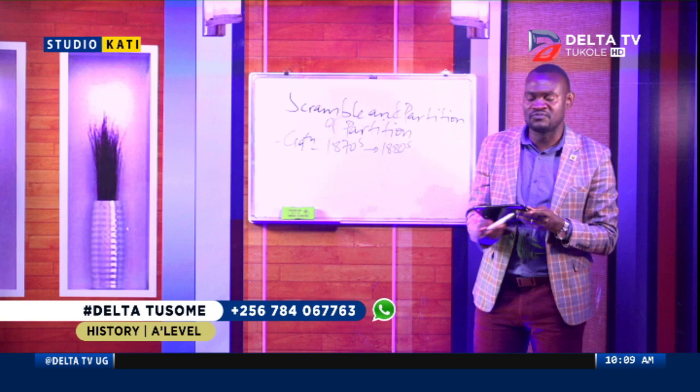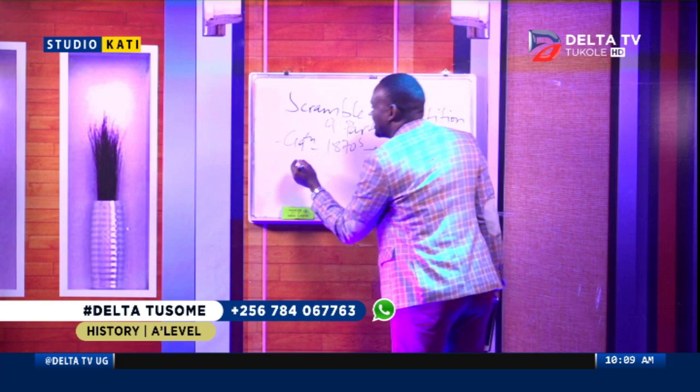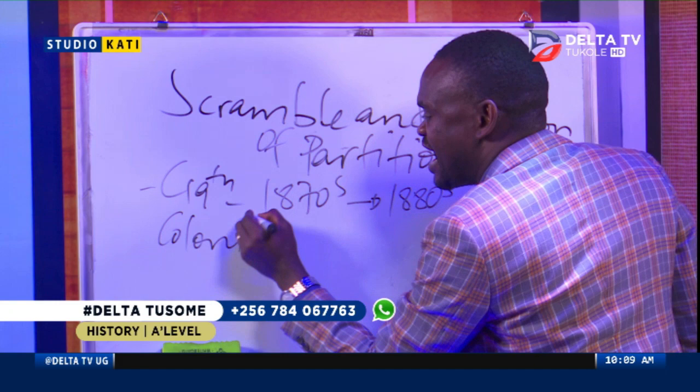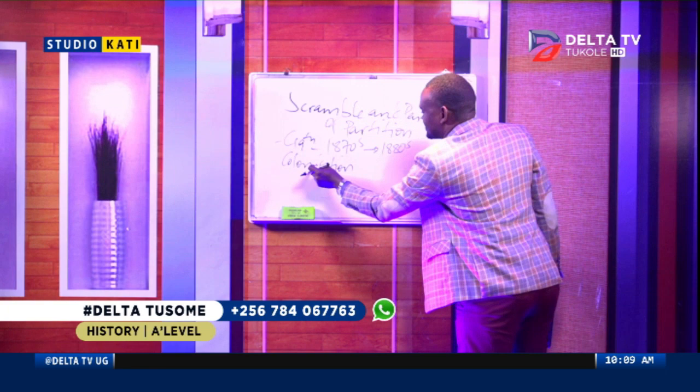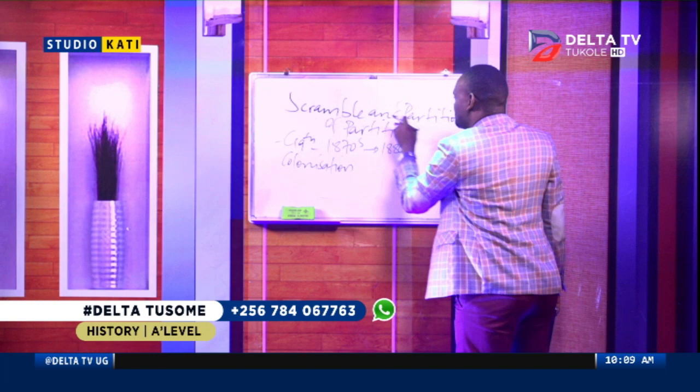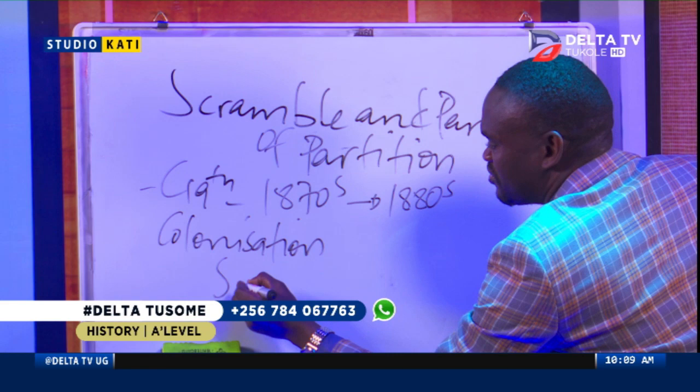At times I always question my learners: is there a difference between Scramble and Partition? I always imagine and believe that these two aspects are a set or subset of colonization. Scramble, if we are to take by definition, was the rush — the rush by European powers to take over colonies in Africa.